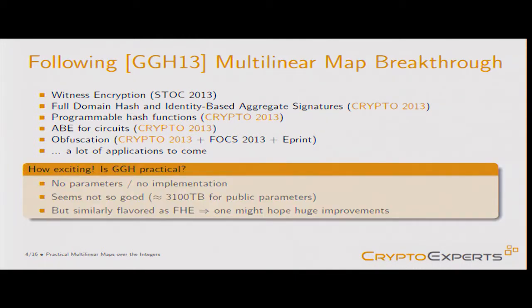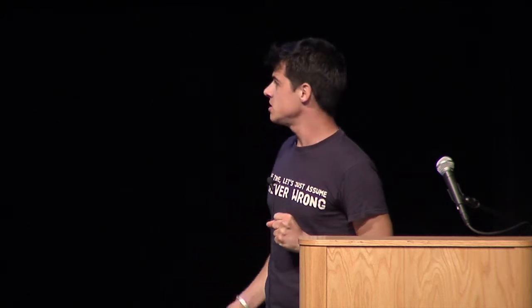It's really exciting, but when we look at the paper, there are no parameters and no implementation. If you plug in numbers — say, a seven-party key exchange with 80 bits of security — you obtain public parameters in the terabyte range. But it's really new and similarly flavored as FHE, so we can expect huge improvements in coming years.